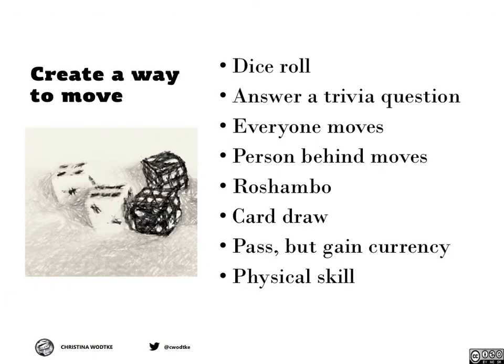Next, we have to figure out a way for people to move along our beautiful path. Perhaps it's a dice roll where you move as many spaces as the numbers on the dice. But that's just pure chance, and pure chance can be pretty boring — think of Candy Land.